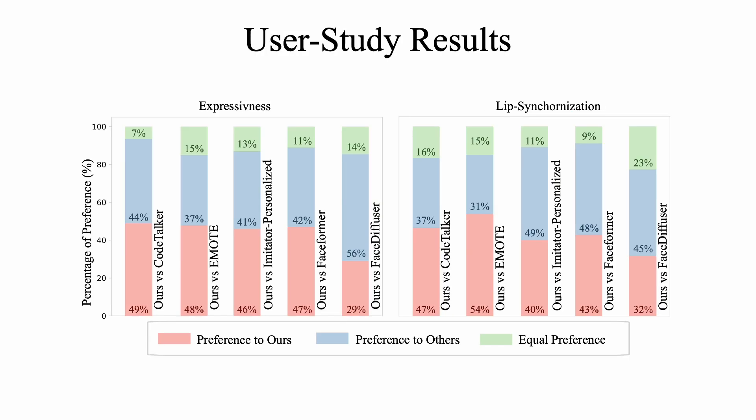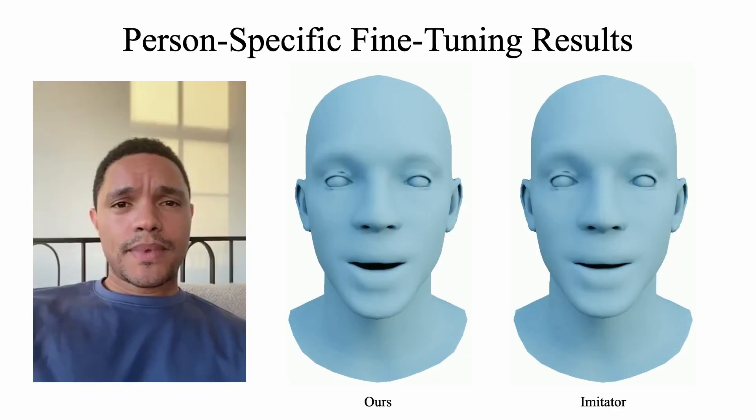A perceptual user study on VOCASET shows our model outperforms the baselines in terms of expressiveness and lip sync. Our lightweight denoising network can be fine-tuned on target-specific data to learn person-specific speaking style.